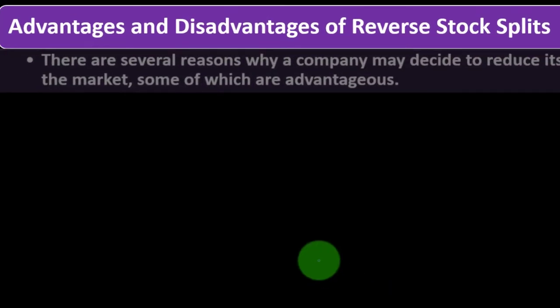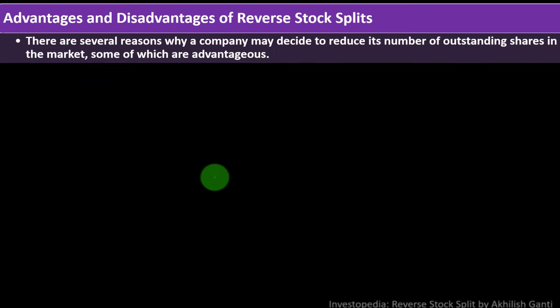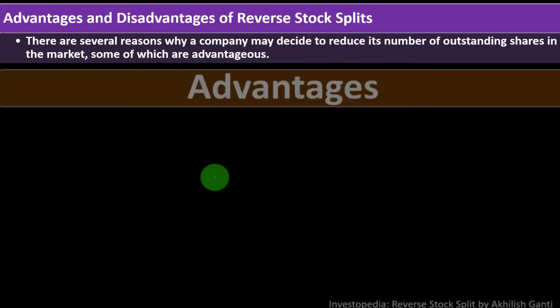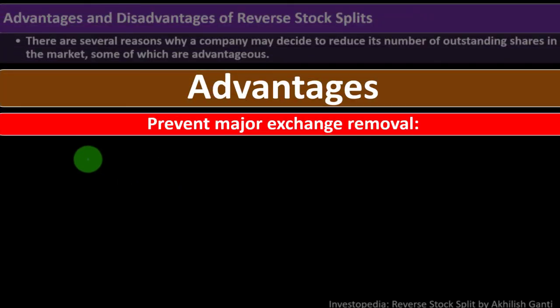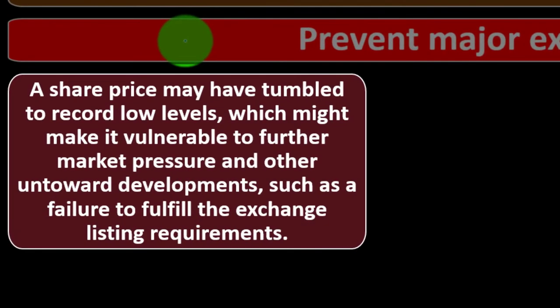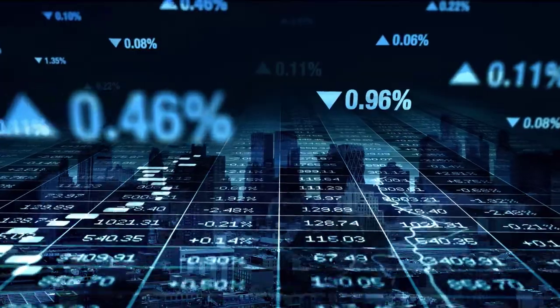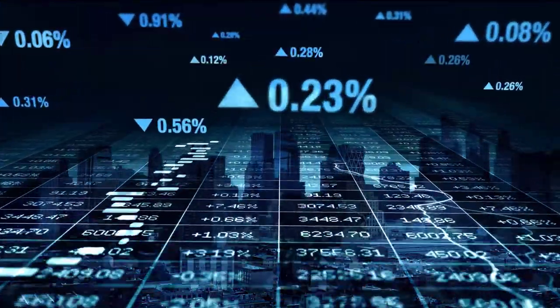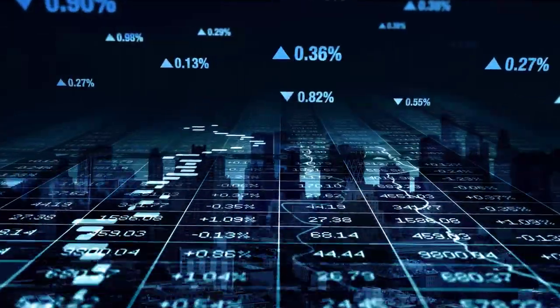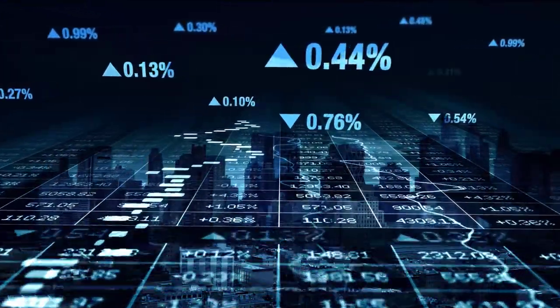There are several reasons why a company may decide to reduce its outstanding shares. One advantage is preventing major exchange removal. A share price may have tumbled to record low levels, making it vulnerable to market pressure and failure to fulfill exchange listing requirements. To be on the exchange, there are requirements such as keeping the stock price above a certain level. If you're in danger of falling below that, you might be kicked off the exchange and lose access to the capital typically available there.